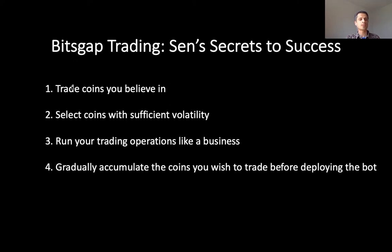Number four is: gradually accumulate coins you wish to trade before deploying the bot. Over this month I'll be looking at coins I might be interested in trading next month — again, subject to meeting the second condition of sufficient volatility. My strategy for preparing to set up a bot is to first accumulate those coins slowly, maybe over several weeks. Why do this? Because I generally get a better price using dollar cost averaging, and also using limit orders instead of market orders can give me a better price as well. You'll get better entry prices when you deploy your bots because you won't have to buy or sell at the moment of deployment.